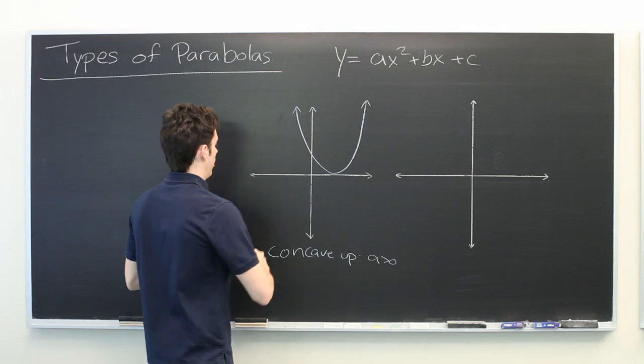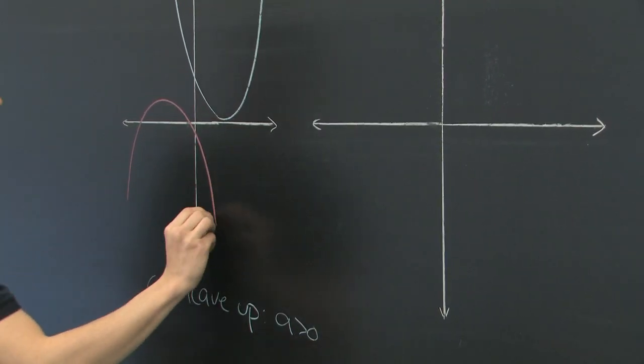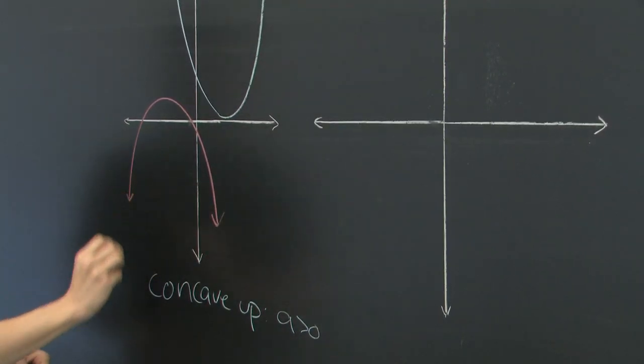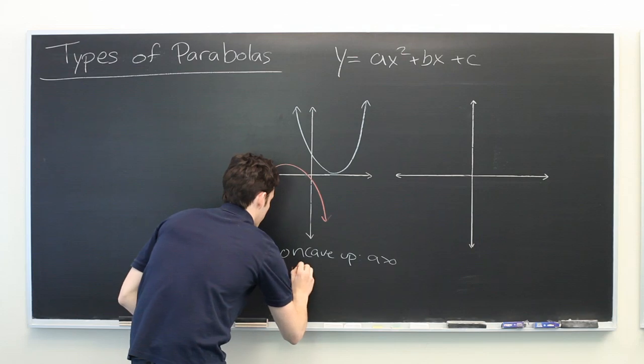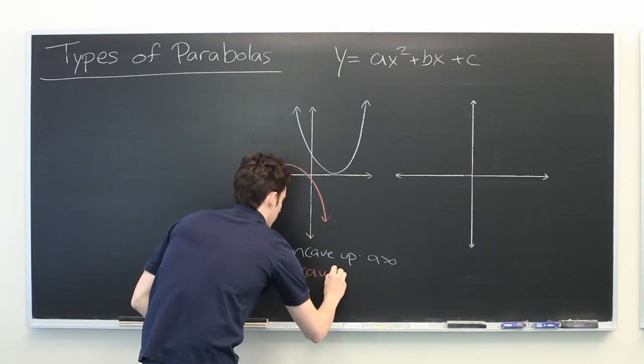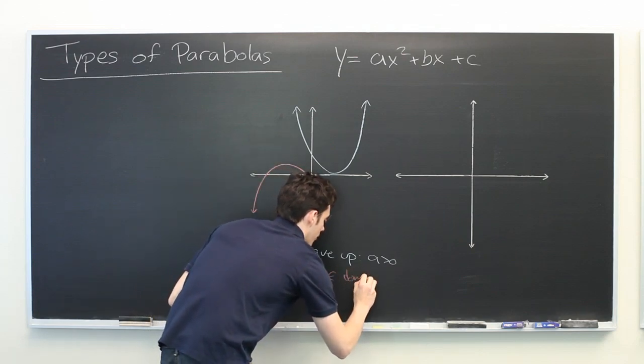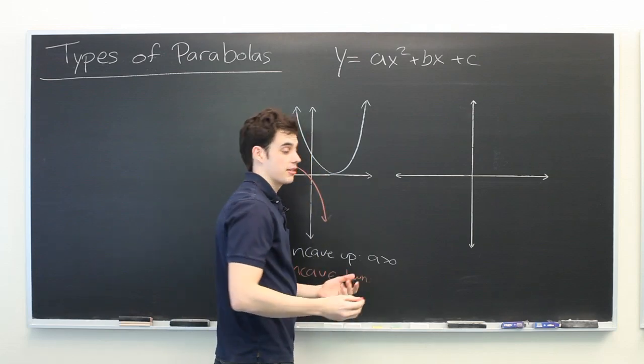The opposite of this is, as you might expect, concave down, which happens when a is less than zero.